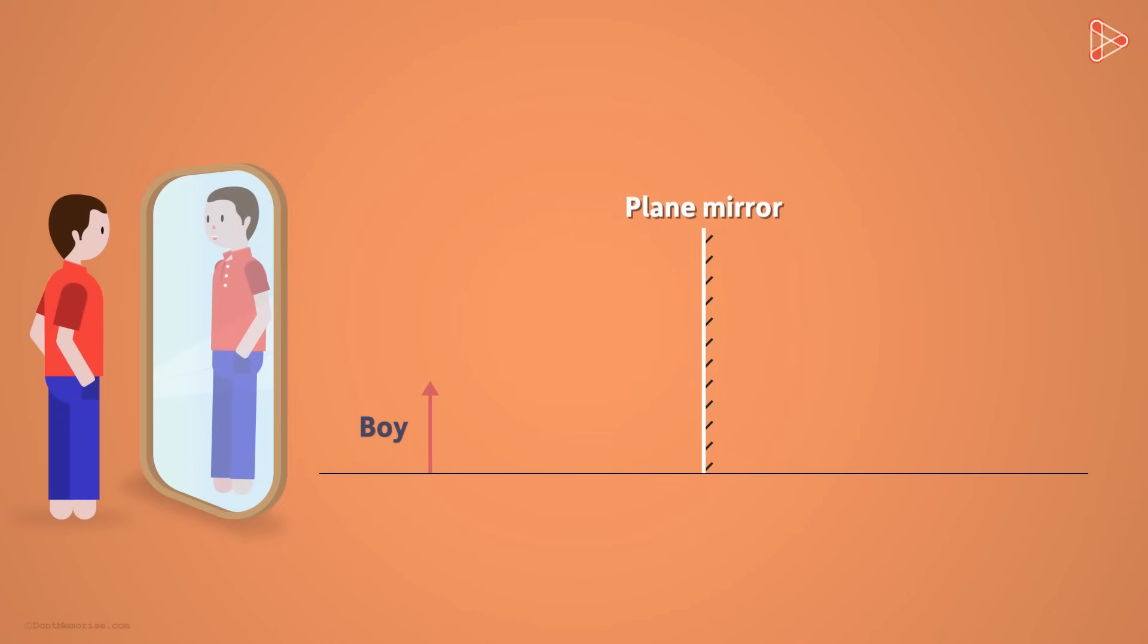Let's represent this boy with an arrow pointing up. And here is our plain mirror. You can assume the top of the arrow to be the top of the head of a boy. Now where is the image of the boy formed? When we see the image in the mirror, it seems to us that the image is formed somewhere behind the mirror.